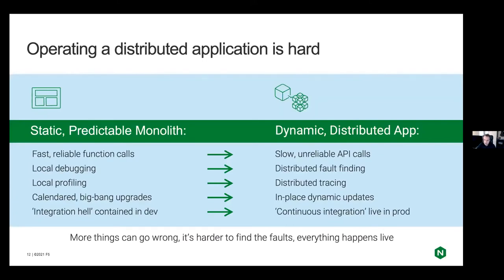There are absolutely some drawbacks when implementing a modern microservices architecture. With a microservices application running Kubernetes, communication between services is much more complicated — they're now network calls rather than function calls. Debugging is very difficult because it's not just one application on a single machine anymore; it could be applications spread across multiple machines, each with its own set of logs and tracing. When it comes to testing, integration testing is more difficult because the components are now distributed, so developers cannot test an entire system from their individual machines.